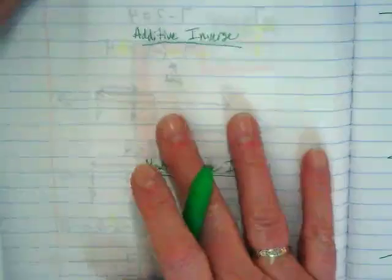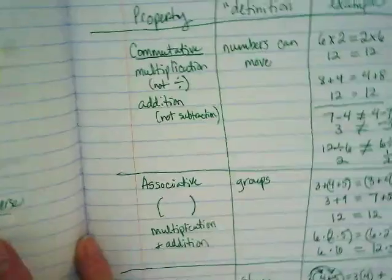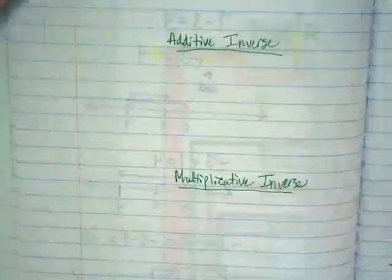So the reason I have these two separate from the other properties, I mean they're on the same two pages, but I put them on the left side because these two are a little bit different.